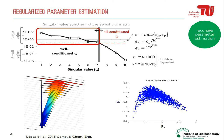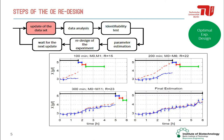Once the parameter estimation has been computed, we use this model that is now closer to the real system to redesign the next steps of our experiment. By this we are using the data as it is being generated through the experiment to adapt our strategy and get closer to the optimal experiment.